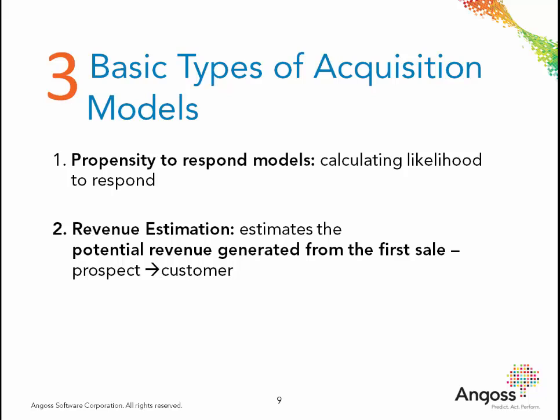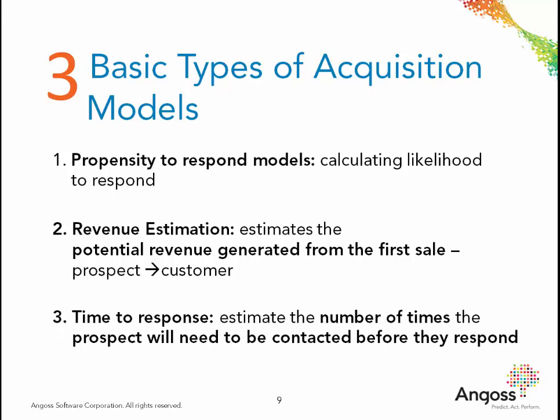This is important in cases when the revenue can vary from one prospect to the other, either in terms of the number of units, different product packaging, and so on. The third propensity model is used in cases where a prospect is contacted multiple times through channels such as mail, phone, or email. Here, we want to estimate the number of times the prospect will need to be contacted before they respond.